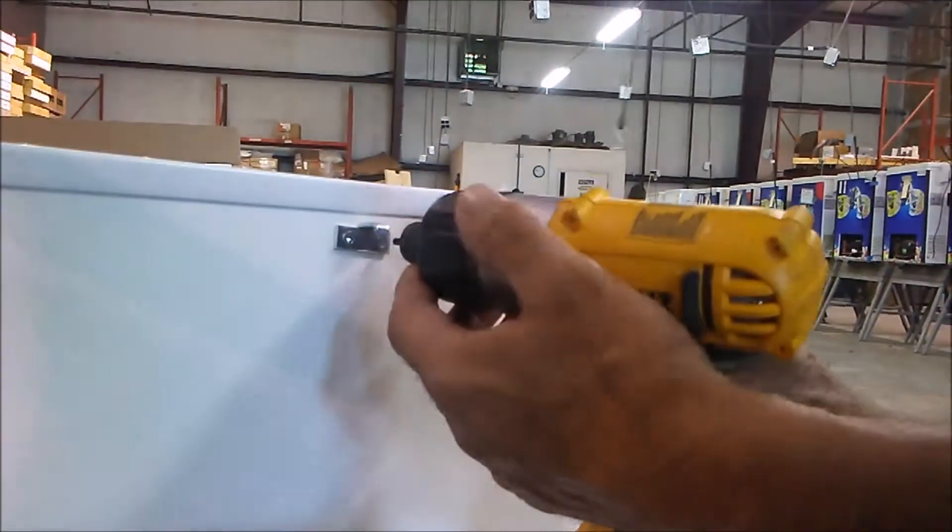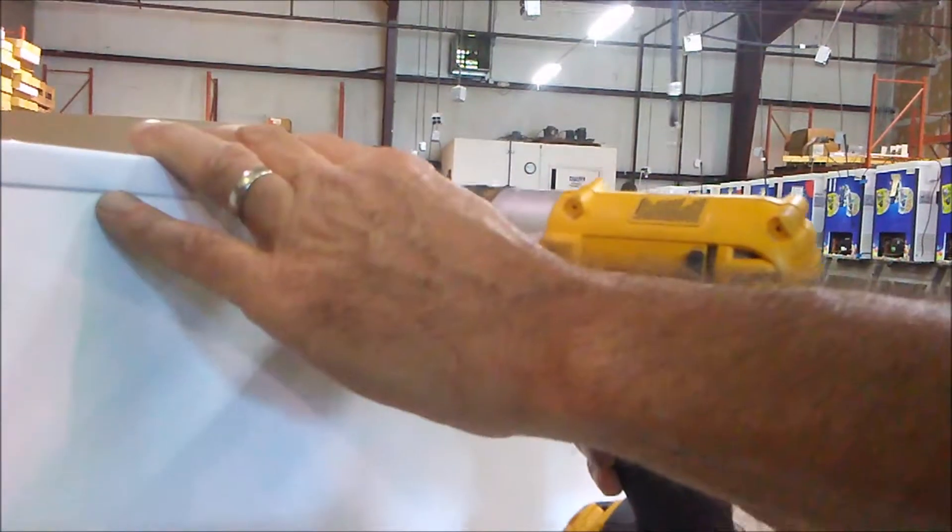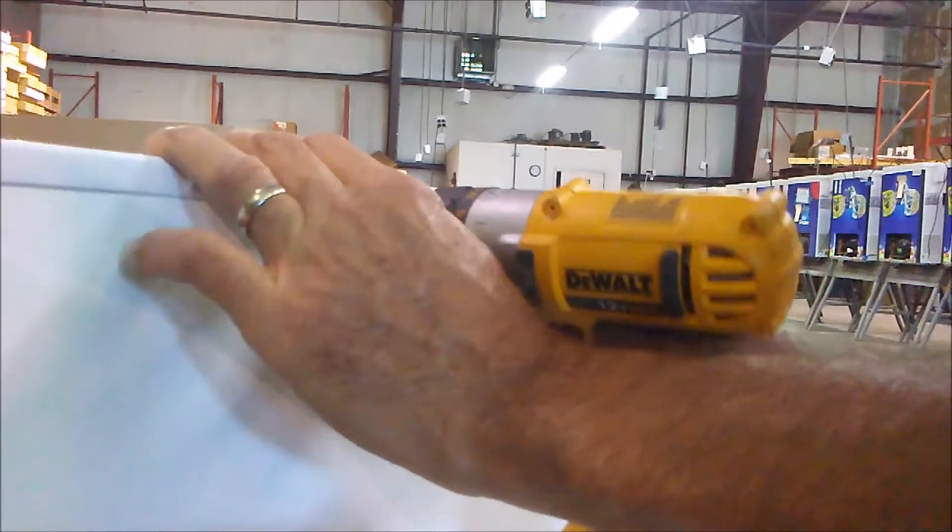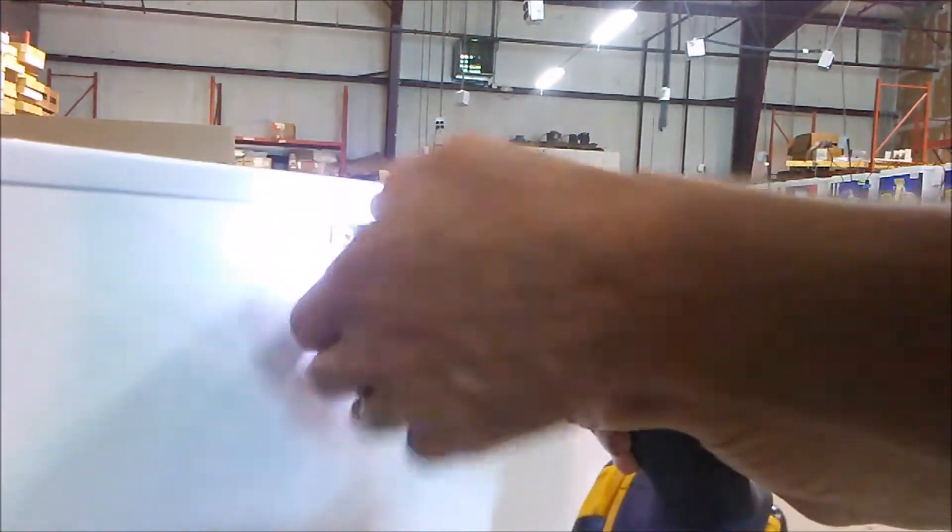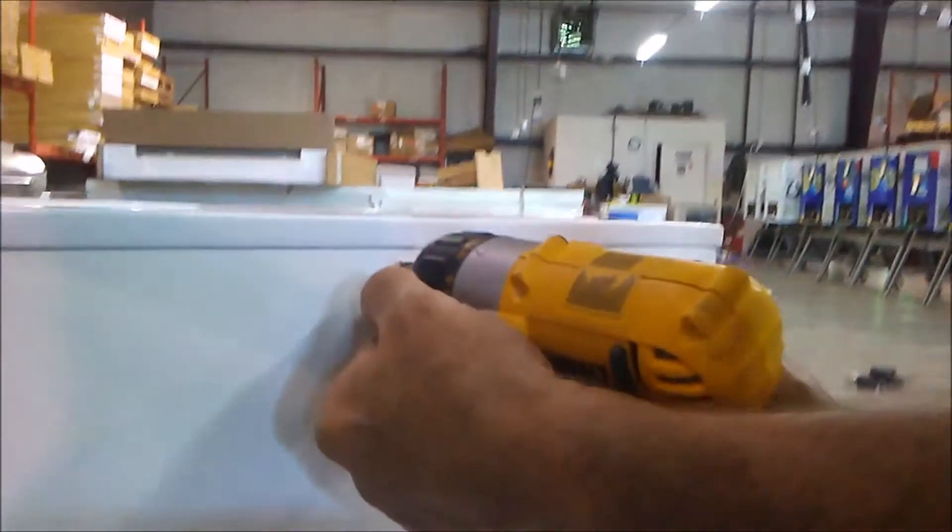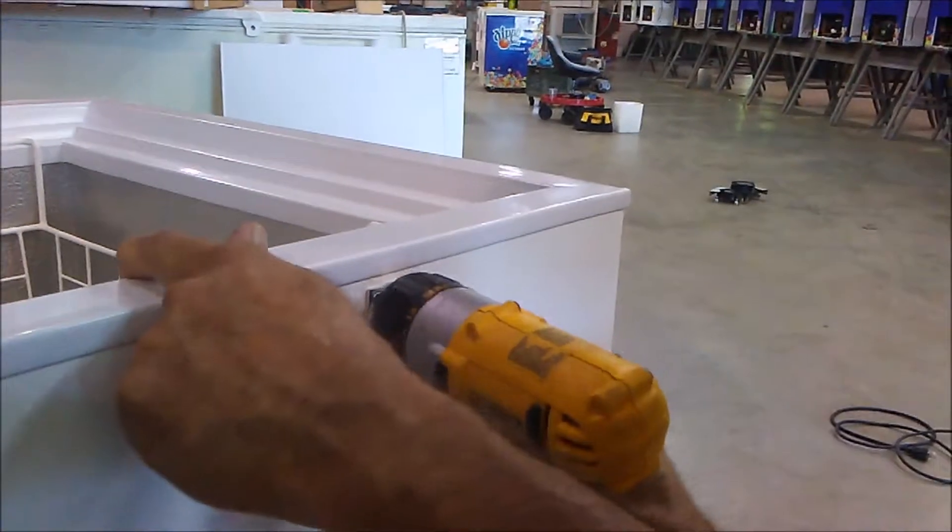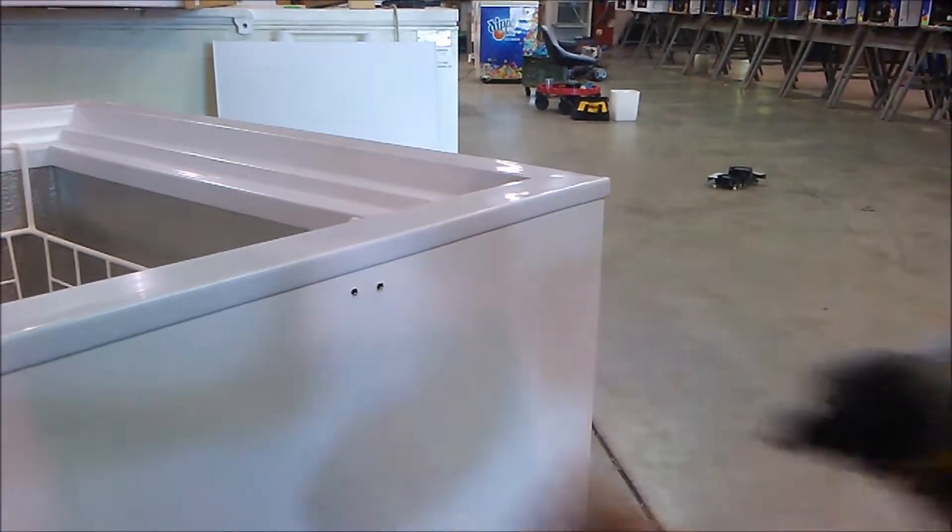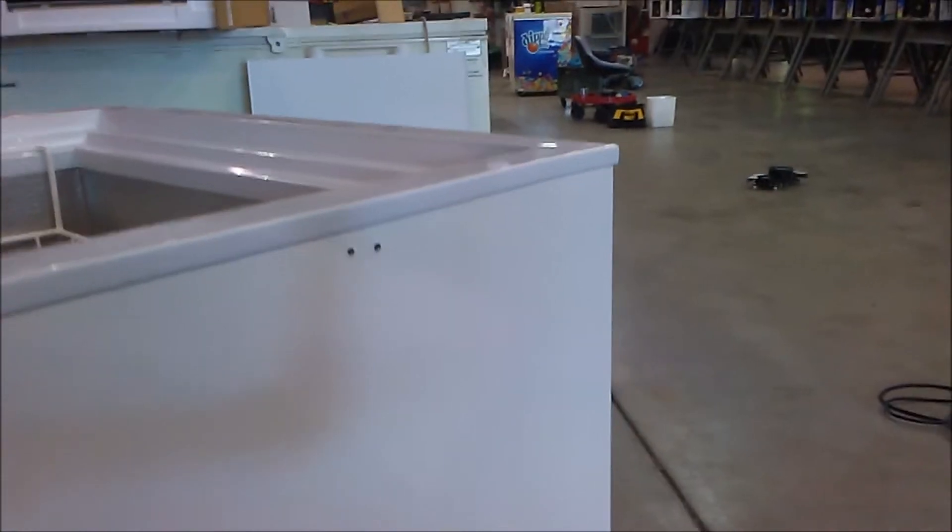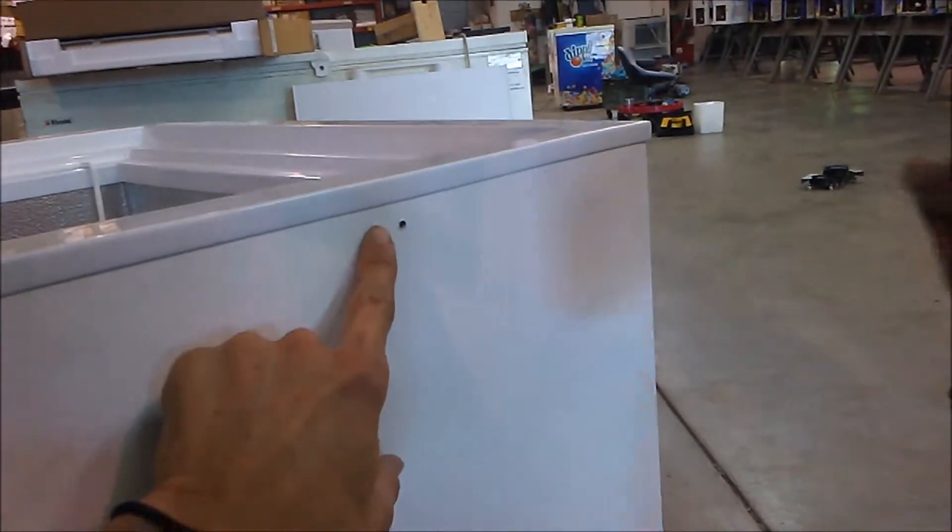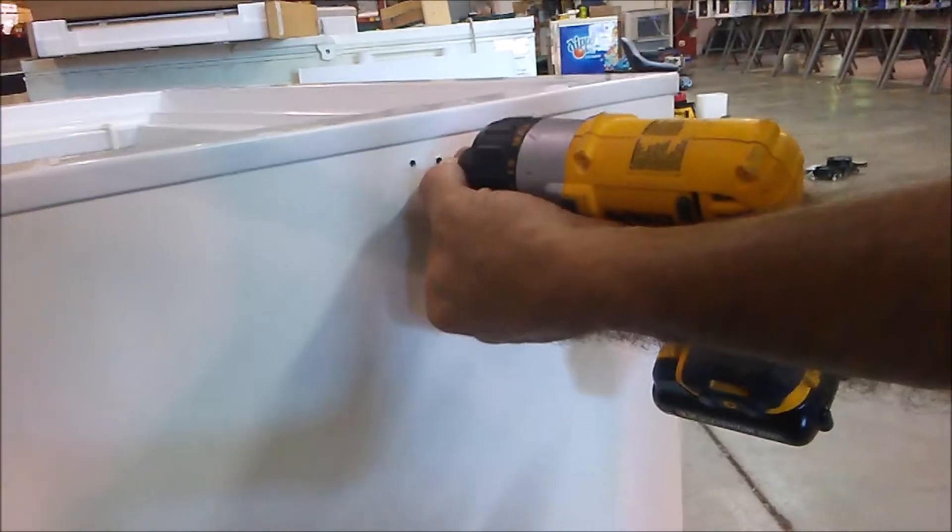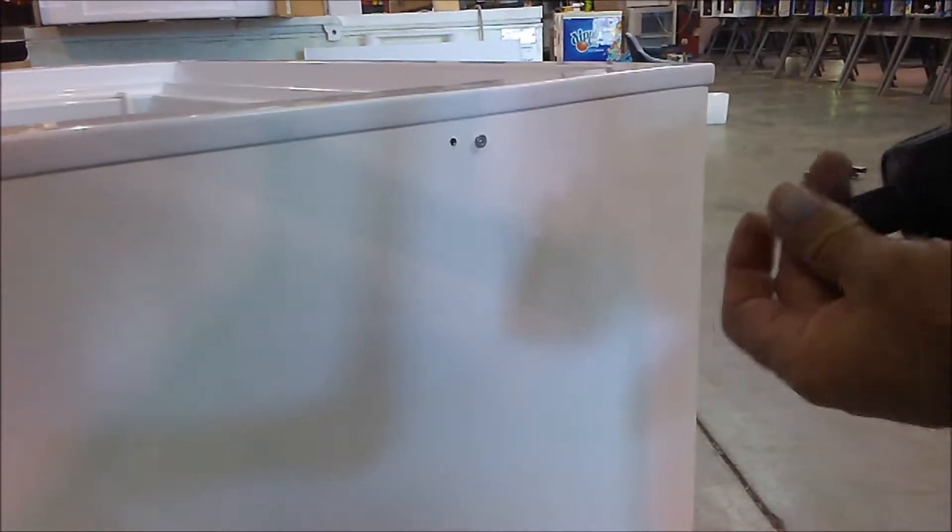Now we'll remove the striker from the front of our freezer. We'll do this using our T15 Torx bit. As mentioned before, the screw holes can be sharp, so we're going to go ahead and put the screws from the striker back into the holes. This will not interfere with the installation of the rail.